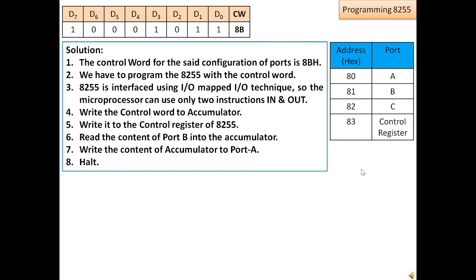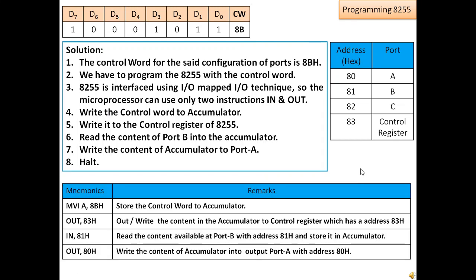We use the immediate instruction MVI A, 8B to store the control word into the accumulator. Then we use OUT 83 to send the accumulator content to the control register, where 83 hex is the port address of the control word register.